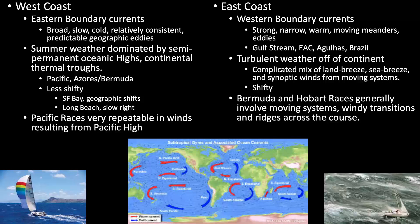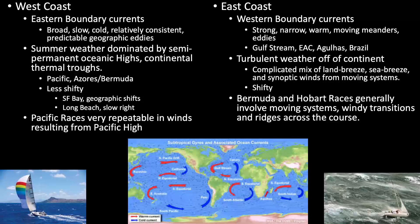Pacific races are very repeatable due to the Pacific High, so many are almost a carbon copy of each other. The Bermuda and Hobart races generally involve moving systems — very windy transitions called southerly busters or southerly changes in the Hobart — and you almost always get a ridge of high pressure across the course. Of all the races, the Hobart is probably my favorite because it's the most difficult to navigate, dealing with multiple systems and the challenging East Australia Current.